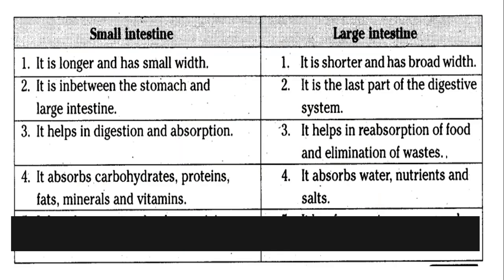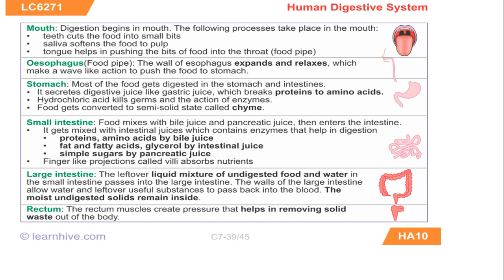The difference between small and large intestine: the small intestine is longer but narrow, while the large intestine is shorter but broad. The small intestine is between the stomach and large intestine; the large intestine is the last part before the rectum and anus. The small intestine helps in both digestion and absorption, but the large intestine is purely for reabsorption of water, nutrients, and salts, and also helps in elimination of waste. The small intestine absorbs carbohydrates, proteins, fats, minerals, and vitamins.